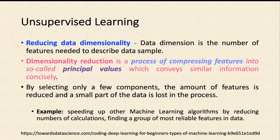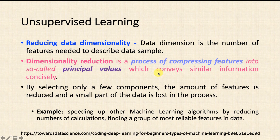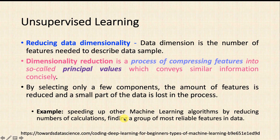The second type of unsupervised application is reducing data dimensionality. Data dimension refers to the number of features needed to describe a data sample. Dimensionality reduction is the process of compressing features into so-called principal values, which convey similar information. By selecting only a few components, the number of features is reduced. A small part of data is lost in the process but this does not affect the original dataset. Key applications include speeding up other machine learning algorithms by reducing the number of calculations and finding the most reliable features in the data.